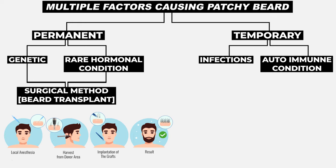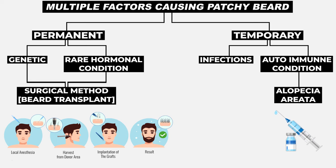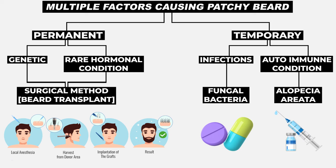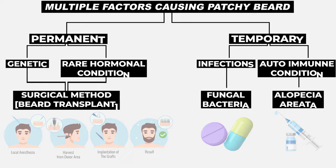If the problem is due to an autoimmune condition like alopecia areata, it can be treated medically with small injections into the affected area along with other medications. If it is caused by fungal or bacterial infection, it can be treated with antibiotics or antifungal treatments. Hair growth will eventually happen once the disease process is stopped and you will get hair recovery.